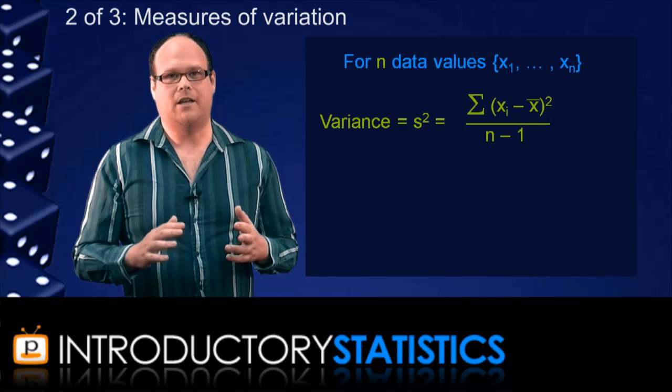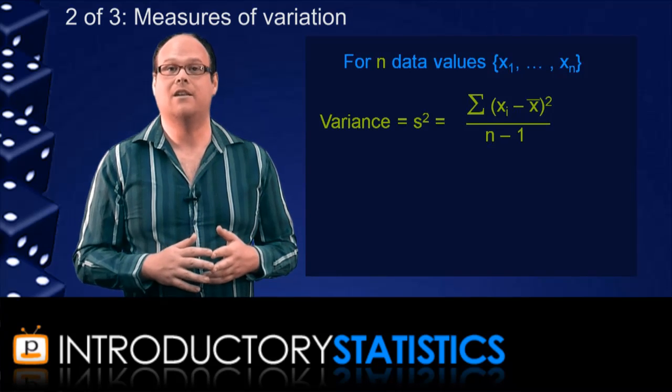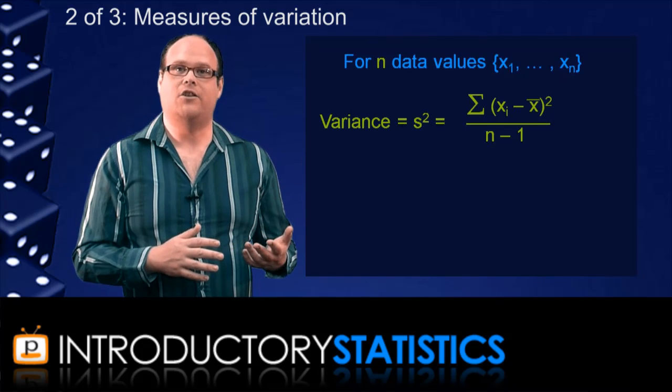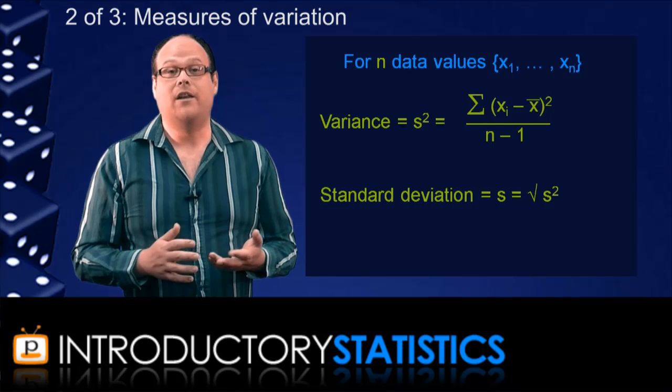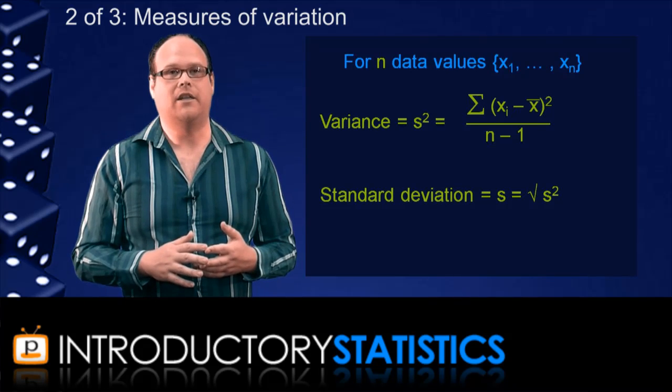You divide by one less than the number of data values. We won't here go into exactly why you divide by n minus one instead of by n to get the average distance, but rest assured that the formula does work better that way. As I mentioned earlier, the standard deviation is the square root of the variance, and really, in terms of measures of variation, the standard deviation is the single most commonly used measure.